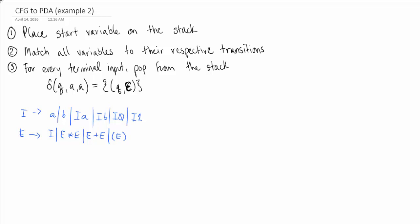So let's get started. For those who don't know, this bar means OR, so that means that this I can be transitioned into terminal A, or terminal B, or variable I followed by terminal A, etc.